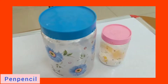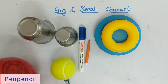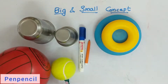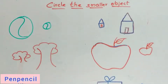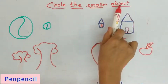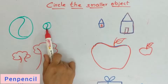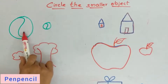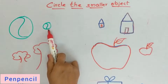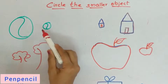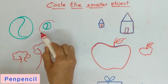Now we will learn this topic with the help of worksheets. Come on, let us start. We have to circle the smaller object. This is a ball — this is a bigger ball, this is a smaller one. So what should we circle? This one — this is smaller, so this one we have to circle.